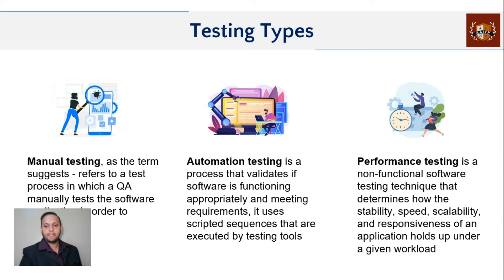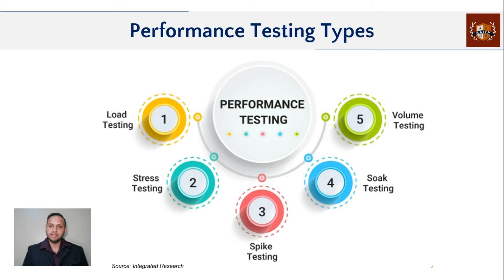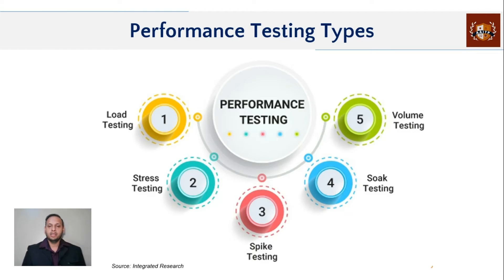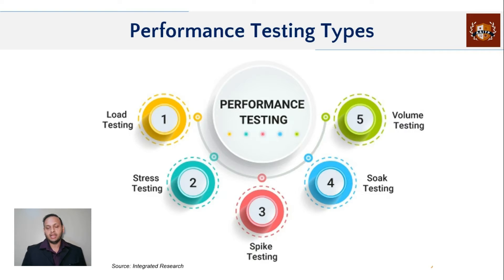Performance testing has its own life cycle, and if we talk about different types of tests, they are majorly divided into five: load testing, stress, spike, soak, and volume. In load testing, we test the actual load on the system to see how it behaves. Stress testing pushes the system beyond expected load. Spike testing introduces sudden spikes in volume. Soak testing is a duration test where you run it for a prolonged amount of time. Volume testing checks the actual data volume the system can handle.